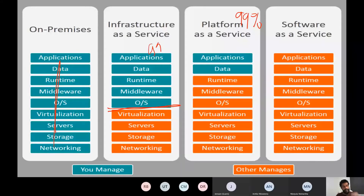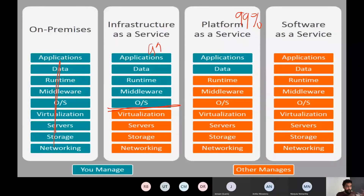Software as a service: up to applications is managed. With software as a service, even the application is being developed and you can use data. The application generates data and handles user management. With on-premises, you own and manage the total system. With infrastructure as a service, we have a partnership. With platform as a service, it's a partnership with Microsoft — we are only looking after management and data.